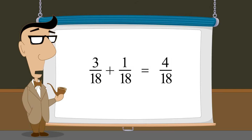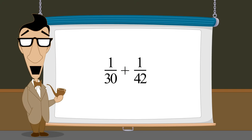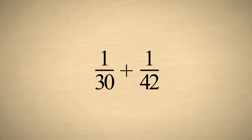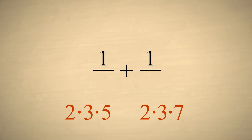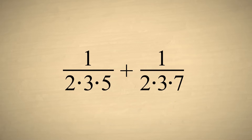Let's try another example, adding one-thirtieth plus one-forty-second. Factoring each denominator, we see that the first denominator needs a factor of seven that the second denominator has. And the second denominator needs a factor of five that the first denominator has.